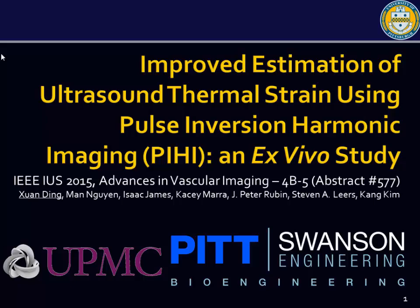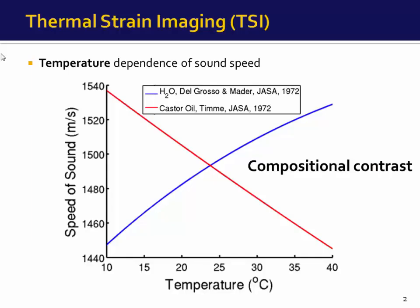Thermal strain imaging, or TSI, relies on the temperature dependence of the speed of sound in water, which is the primary constituent of many biological materials. The sound speed increases with increasing temperature, as shown here in the blue line.